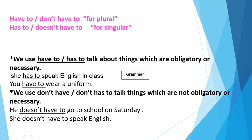She doesn't have to speak English — we use 'doesn't have to' because the subject is singular. So we use 'have to' and 'don't have to' for plural, and 'has to' and 'doesn't have to' for singular. 'Has to' is affirmative and 'doesn't have to' is negative.